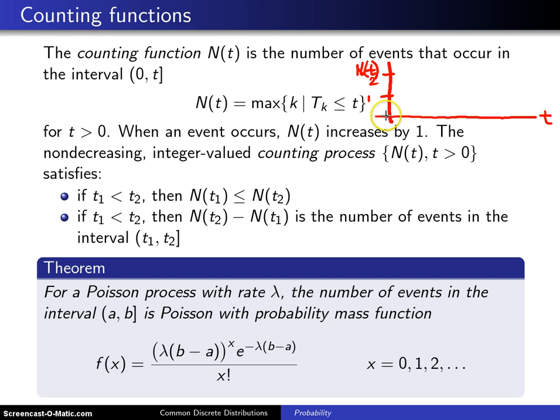And so starting at time 0, you will wait until there is an event. And the first event might occur, say, right here at time t1. And at this time, this counting function will jump up to 1.